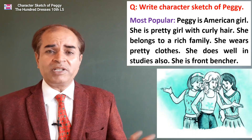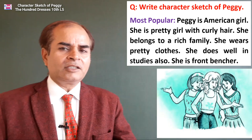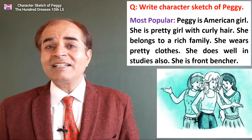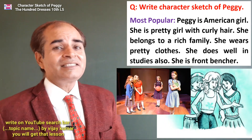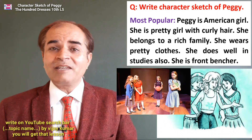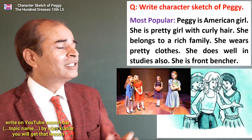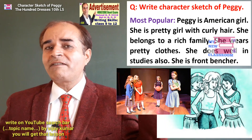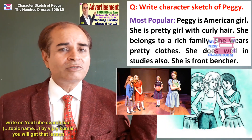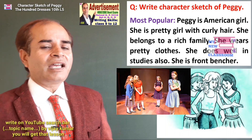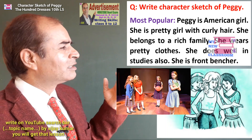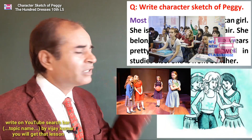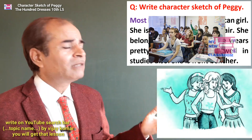Peggy is the most popular girl. She is an American girl — a pretty little girl with curly hair. She belongs to a rich family and has lots of pretty clothes to wear. She also does well in studies and is a front-bencher.